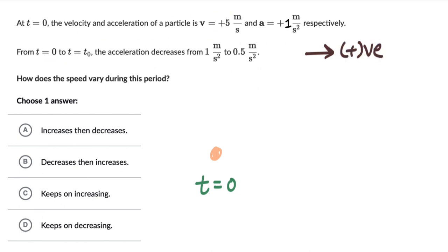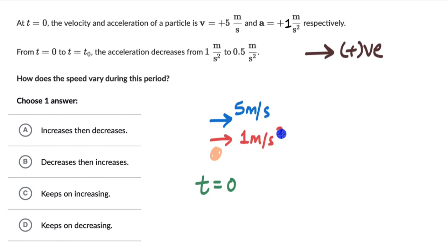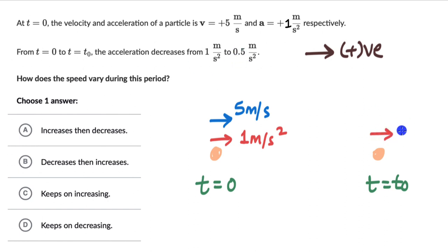Velocity of +5 meters per second means the ball is moving to the right with 5 meters per second. Acceleration is +1 meters per second squared, which means acceleration is also to the right — both are positive, so 1 m/s². At time t₀, the acceleration has decreased to +0.5 meters per second squared, still positive, so the arrow still points to the right.